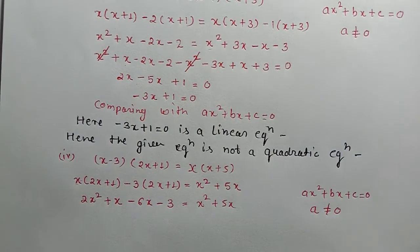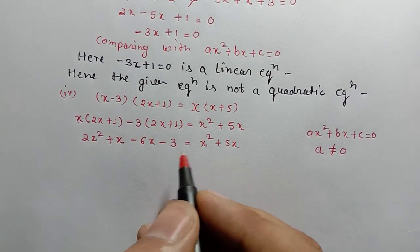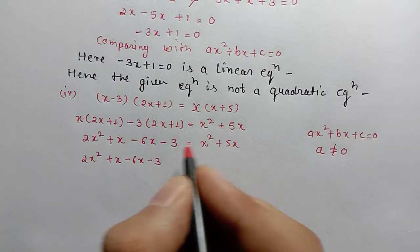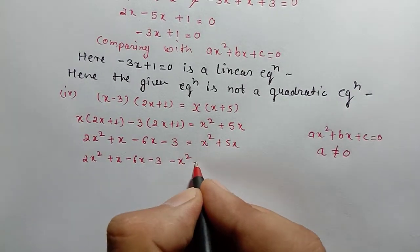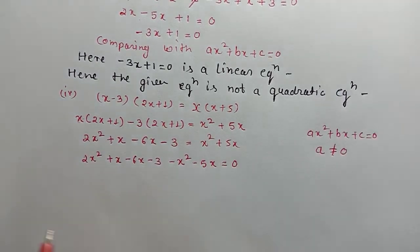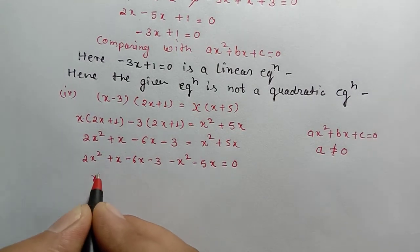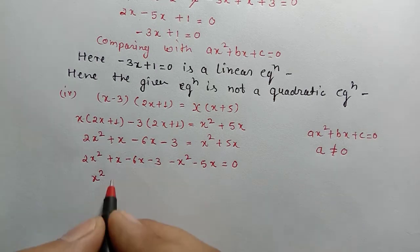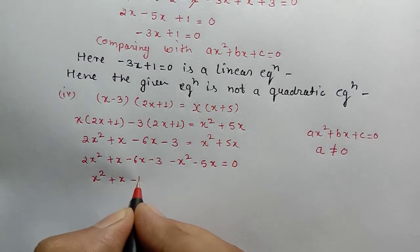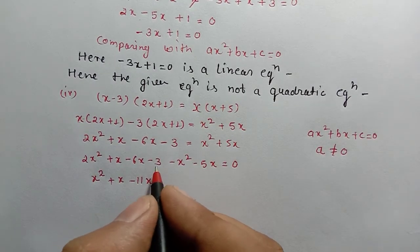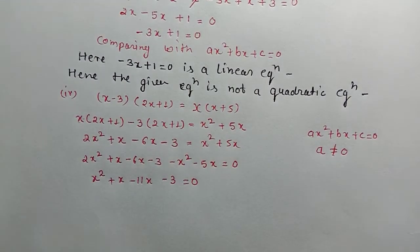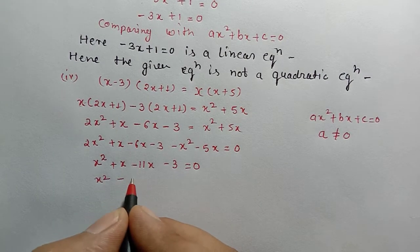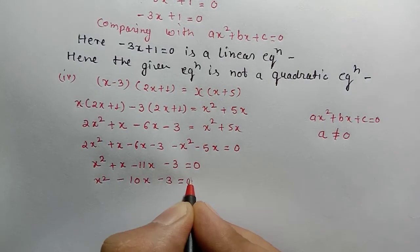We need to compare, so we need zero on one side. Transfer all terms: 2x² + x - 6x - 3 on the left. x² was positive on right, so it becomes minus x². 5x was positive so it becomes minus 5x, equals 0. Now: 2x² minus x² gives x². Then x minus 6x minus 5x — since 6 and 5 are both negative, they add: minus 11x. Then 11x minus 1x gives... using bigger sign: x² minus 10x minus 3 = 0.